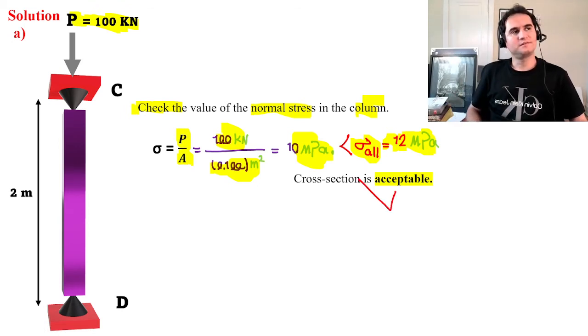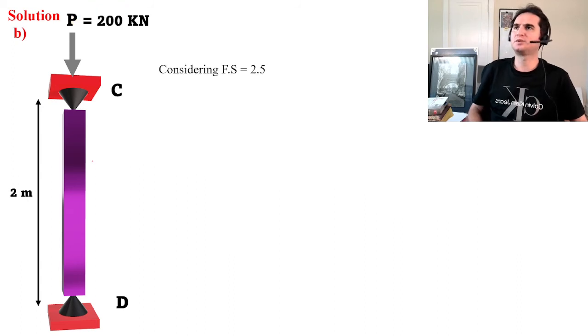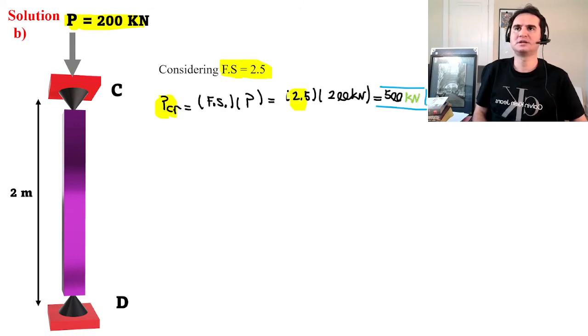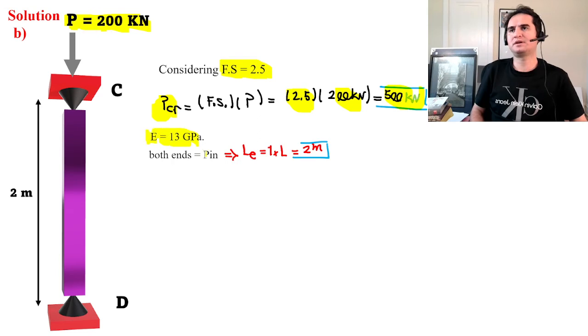Let's see what will happen if we double the force. If this time we apply twice that force, that's a compressive force of 200 kilonewtons applied at the top. Again, factor of safety remains the same. This time P_critical is 2.5 factor of safety times 200 kN, which gives us a critical force of 500 kN.